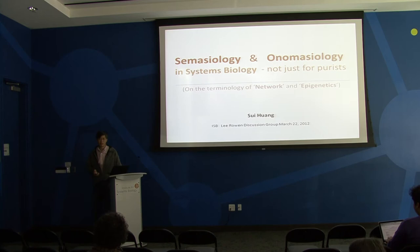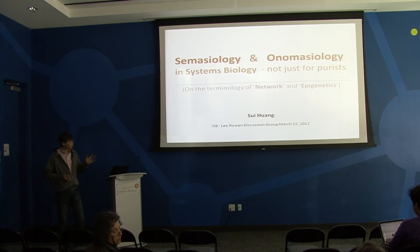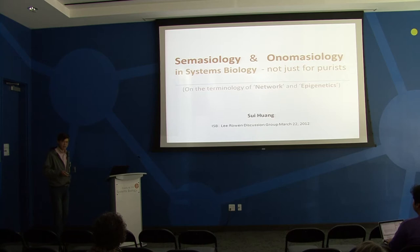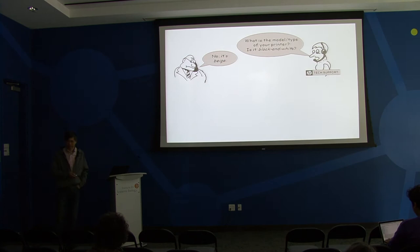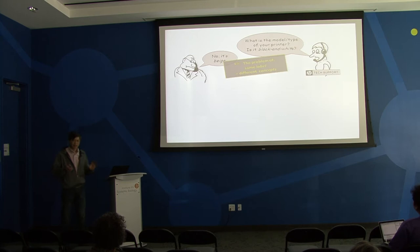Good morning everybody, thank you for coming despite this very abstract title. This is going to be something experimental because I've never talked about these very abstract things. For those who haven't read the abstract - where I explain what mythology and onomasiology are - the goal is to provide you with something very useful that you can use for your writing. One example: a technical support guy asks the customer 'is your printer black and white?' He wants to know the model, and the user says 'it's beige.' That's not very helpful, and that is because of a problem in communication.